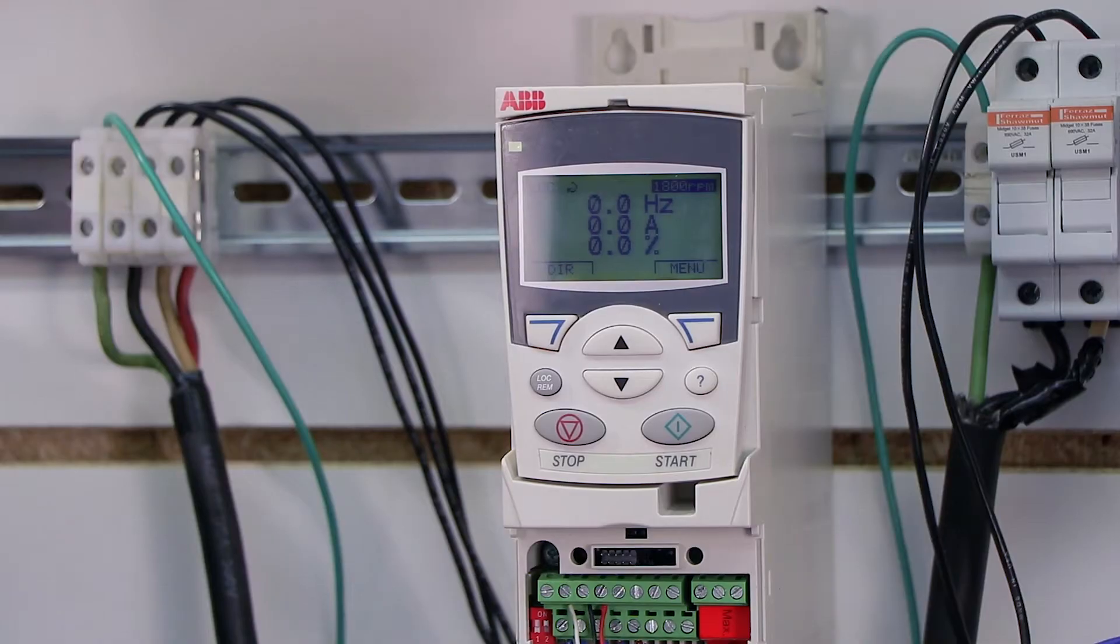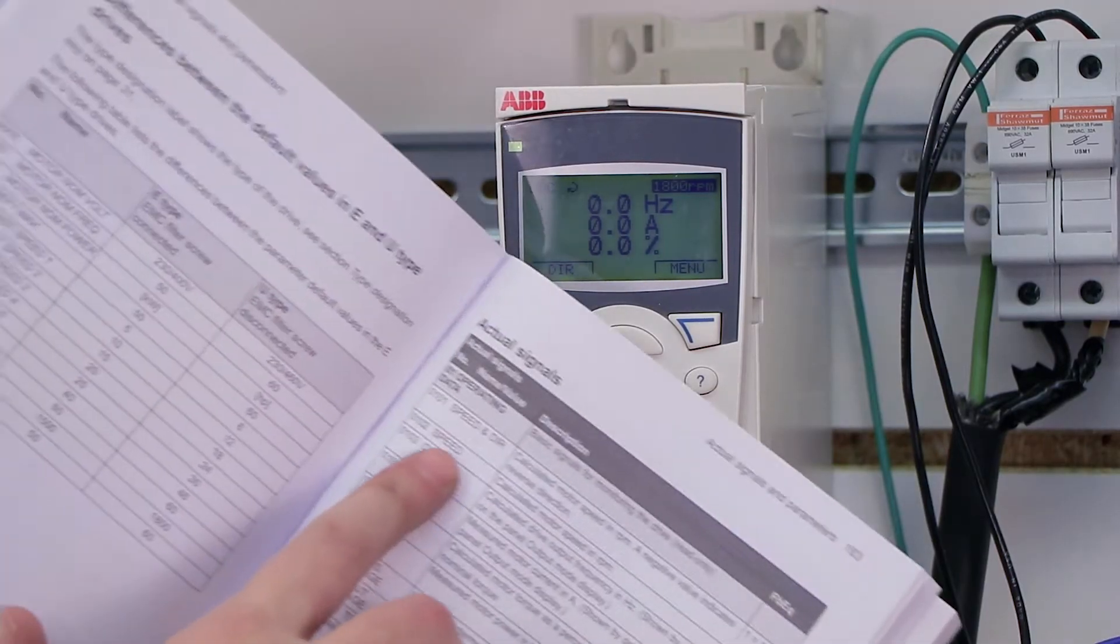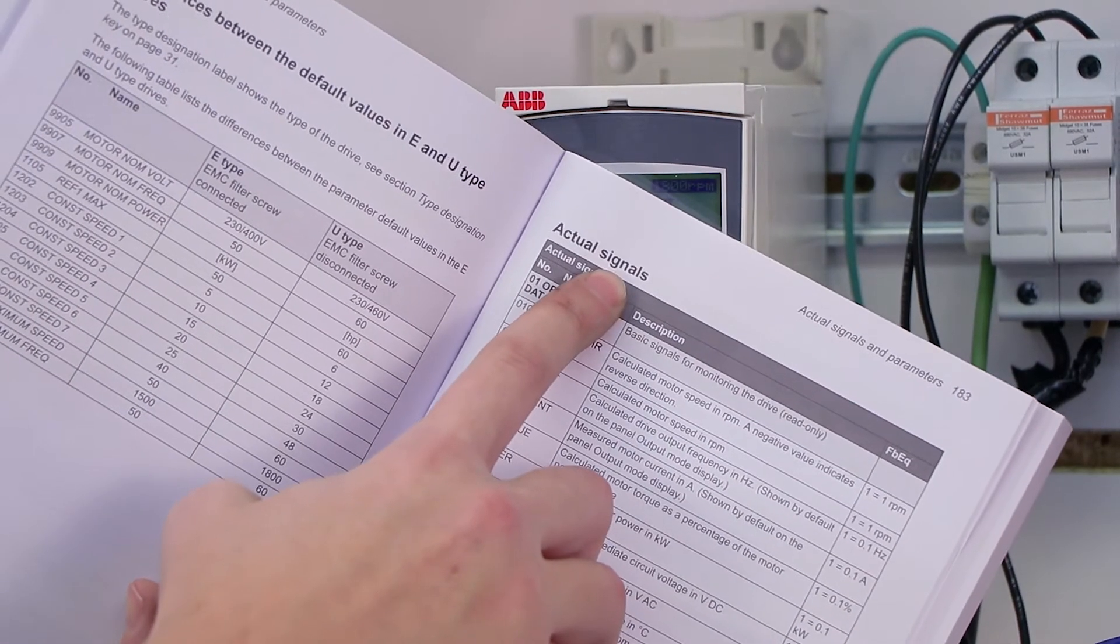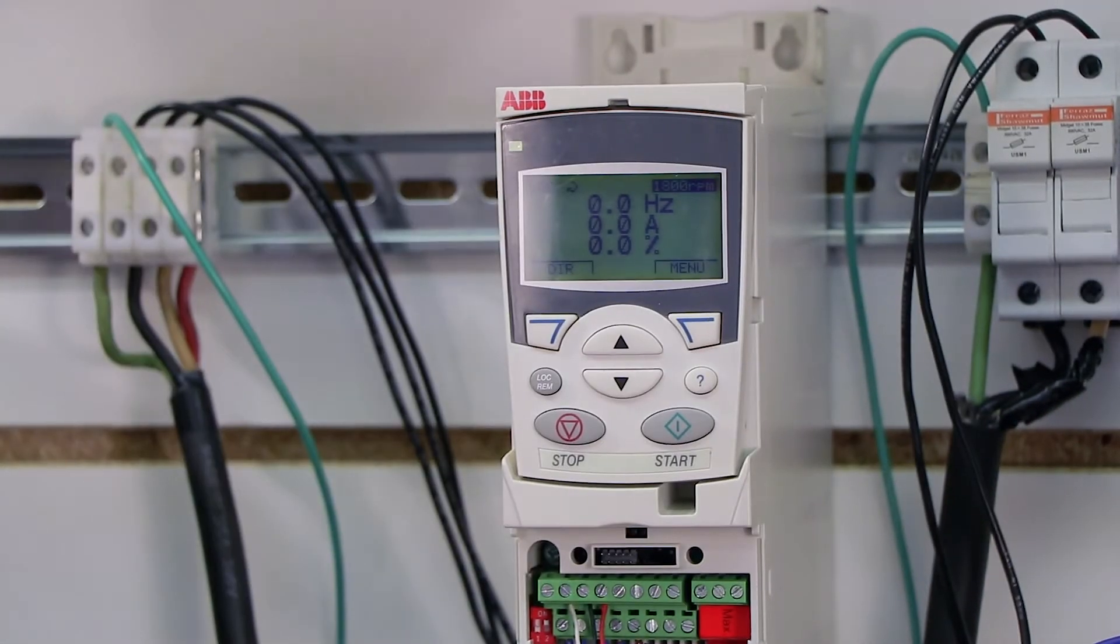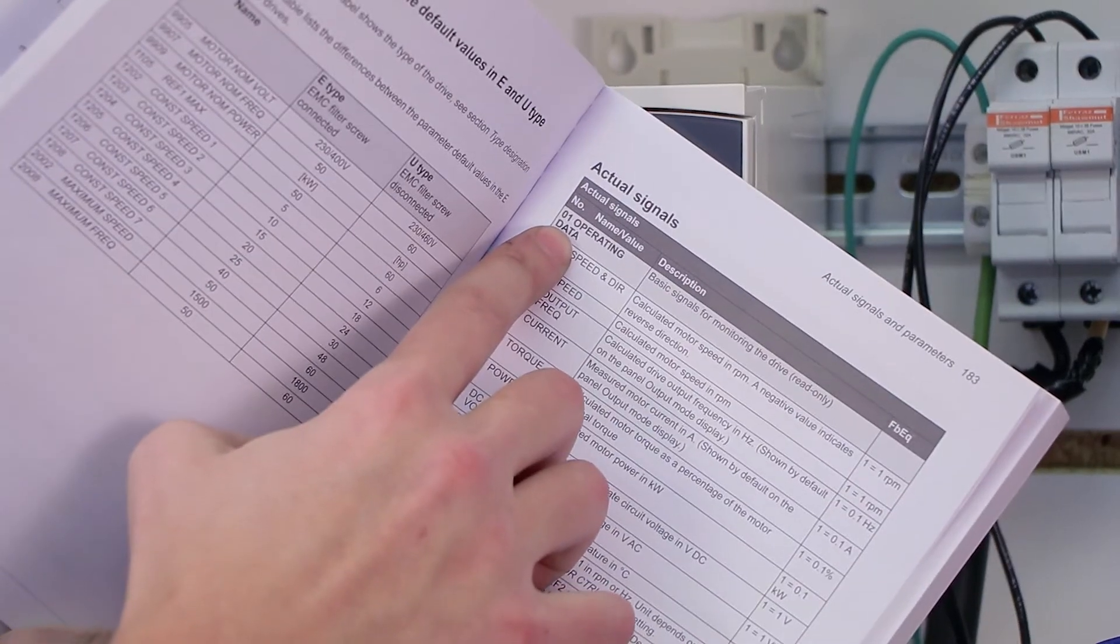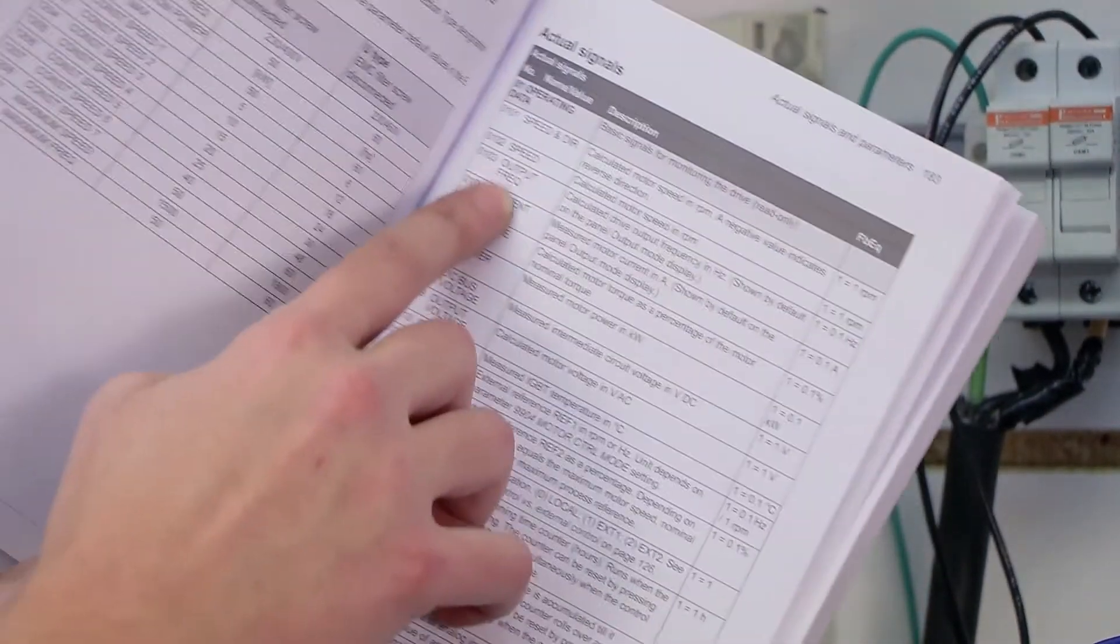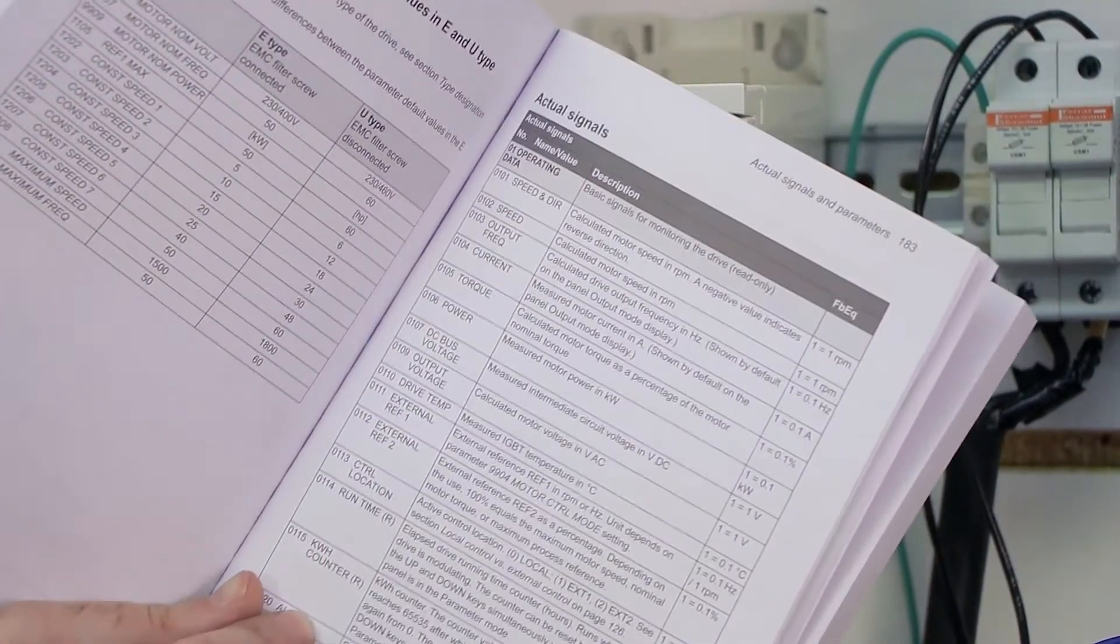So let's go ahead and check it out. As always, if you follow along in the manual, you can look under actual signals. In my manual, it's page 183. But essentially, it's parameter group 01, operating data, and that will actually give you a nice list of all the signals we're going to be looking at.